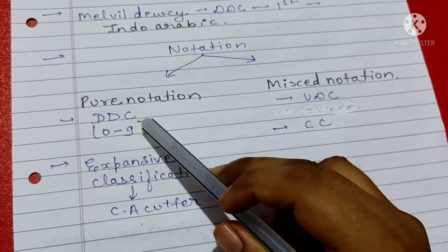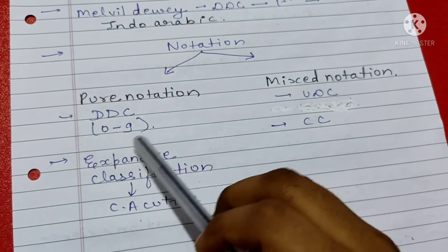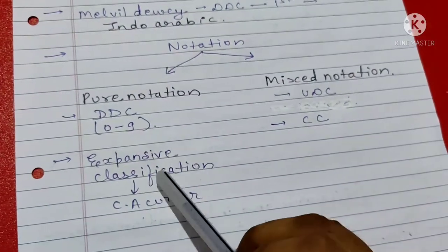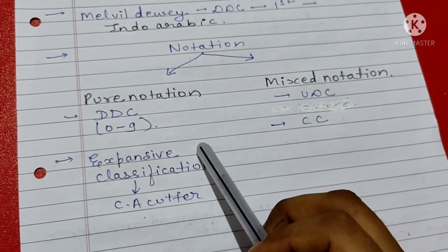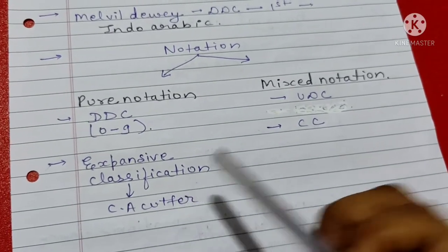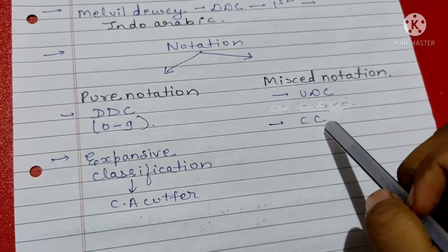It was used in DDC, which was 0-9. In Expansive classification, there was pure notation. It was used in C-Cutter. Mixed notation is only UDC and CC.